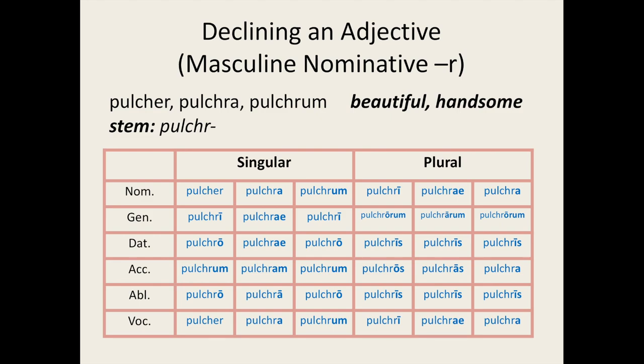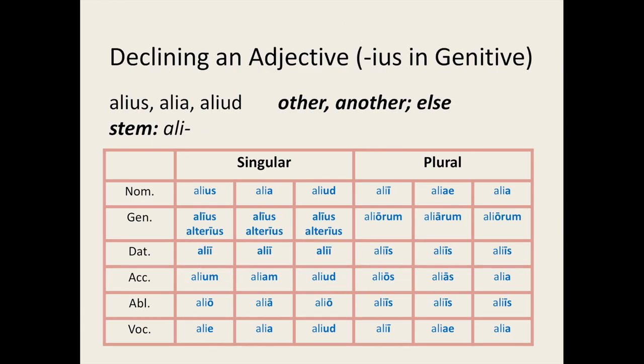There are, however, some first and second declension adjectives which behave slightly differently. An example being pulcher, which means beautiful or handsome. Notice that the masculine form is pulcher, whereas the feminine nominative singular is pulchra, and the neuter nominative singular is pulchrum. Just like with multus and suus, the stem is formed by taking the -a off pulchra, the feminine nominative singular form. This stem is then used to form all other forms of the adjective, with the exception of the nominative masculine singular and the vocative masculine singular, which are both pulcher.